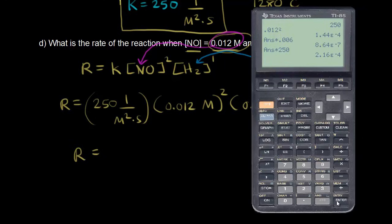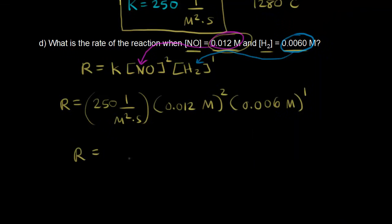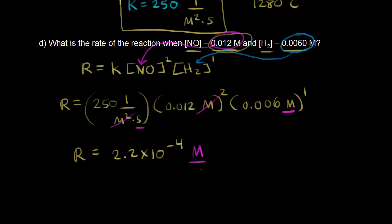This gives us 2.16×10⁻⁴, which we round to 2.2×10⁻⁴. For the units, we have M⁻²s⁻¹ × M² × M, giving us molar per second — which are the correct units for the rate of reaction. So the rate is 2.2×10⁻⁴ molar per second.